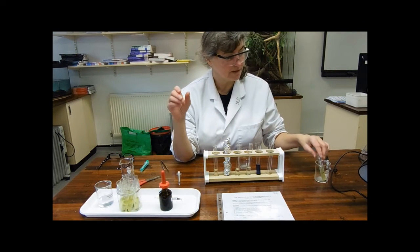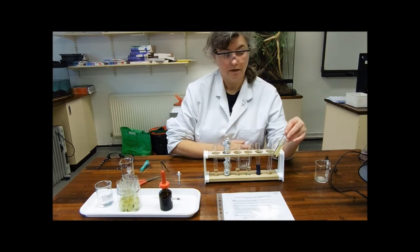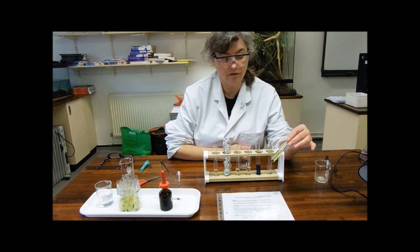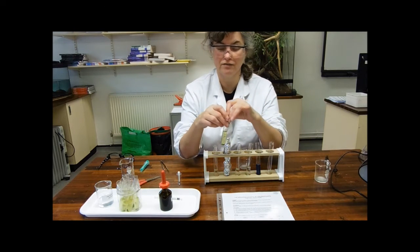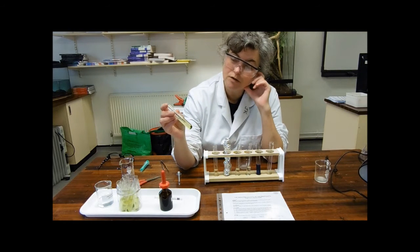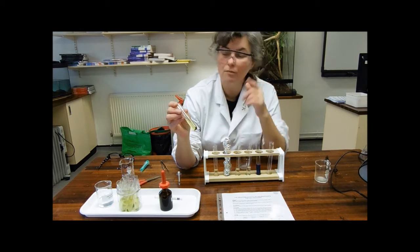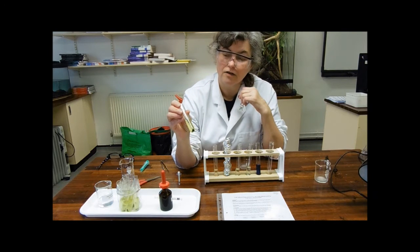In preparation, spinach leaves have been ground up and then centrifuged to within an inch of their lives. In this tube, what you're seeing, that dark green blob right at the bottom, are the chloroplasts.